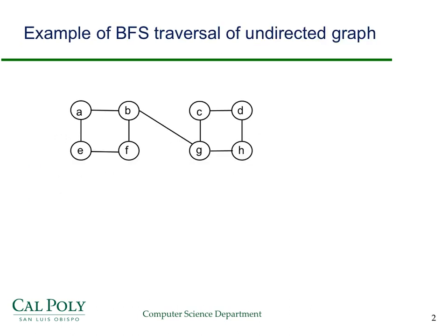Here's an example which I'm going to do in detail in a second. But let's just think about it for a moment. If we start at A — that's the first vertex we're going to visit — then what we'll do is visit B and then E, by traversing A's adjacency list and putting B and E on a queue.